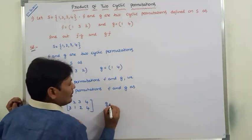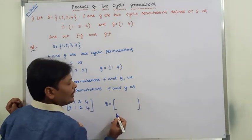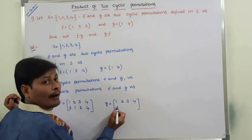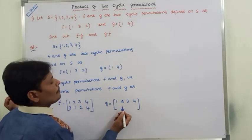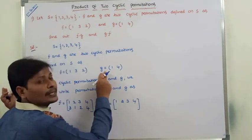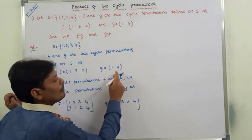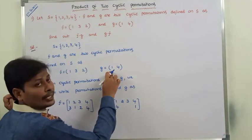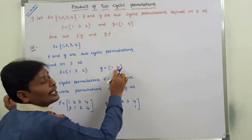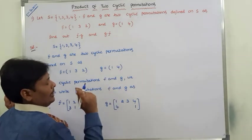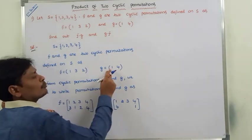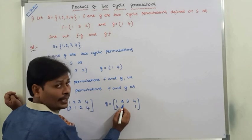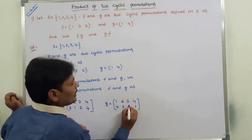Similarly, permutation G is written with all elements of set S in the first row. The second row contains images from cyclic permutation G = (1, 4): element 1's image is 4 (the element that follows it), and element 4's image is 1 (the first element). Elements not in the cycle map to themselves: image of 2 is 2, and image of 3 is 3.